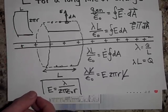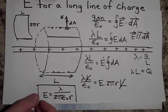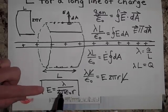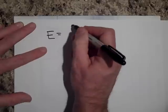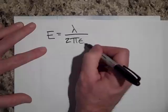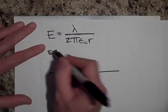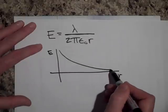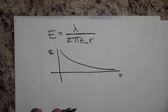That was the electric field due to a long line of charge. Let me say something about this formula: all these things are constants — lambda is a constant, 2π and epsilon naught are all constants. So if I were going to graph the equation E equals lambda over 2π epsilon naught r, it looks something like this — it's a 1 over r graph. See you in the next one.